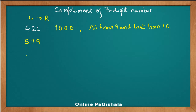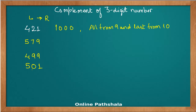Let us take another example: 499. Using the same method, 9 minus 4 gives 5, 9 minus 9 is 0, and 10 minus 9 is 1. So 501 is the complement of 499.